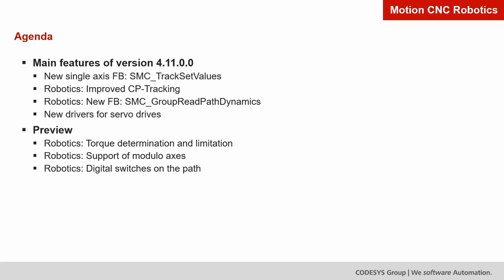Version 4.11 includes a new single-axis function block, SMC Track Set Values. We have improved the CP tracking, which is the major part of this release. For robotics, there is a new function block, SMC Group Read Path Dynamics. We added support for several new servo drives. I would also like to announce three new features extending the existing robotics implementation: torque determination and limitation prototype, support of modular axis, and digital switches on the path.